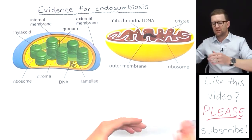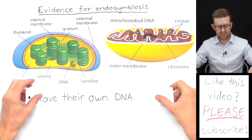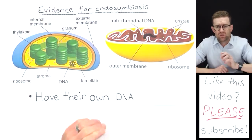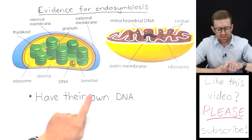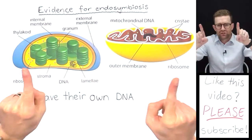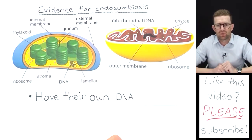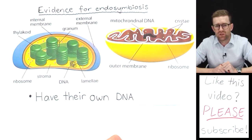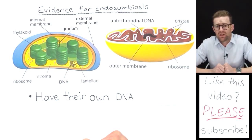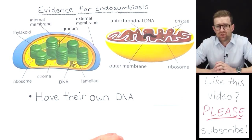Firstly, mitochondria and chloroplasts both have their own DNA. Not only that, but the DNA found inside chloroplasts and mitochondria is circular, like prokaryotic cells, and not linear like eukaryotic cells. Also, the DNA inside the chloroplasts and mitochondria does not contain proteins like the DNA inside eukaryotic cells.